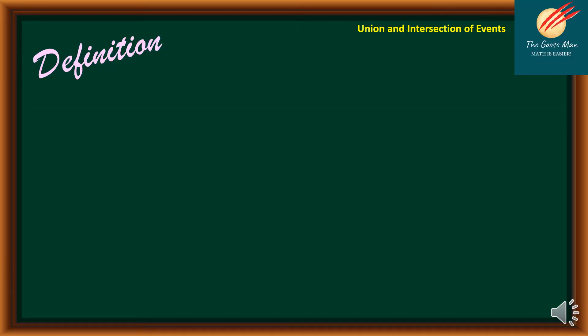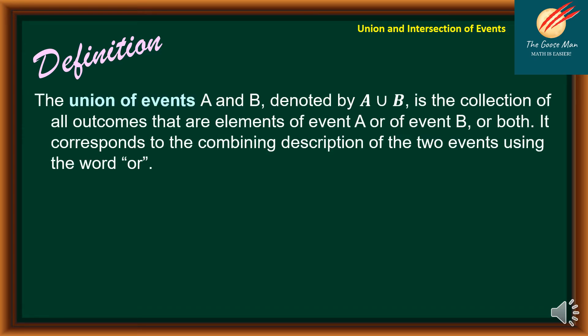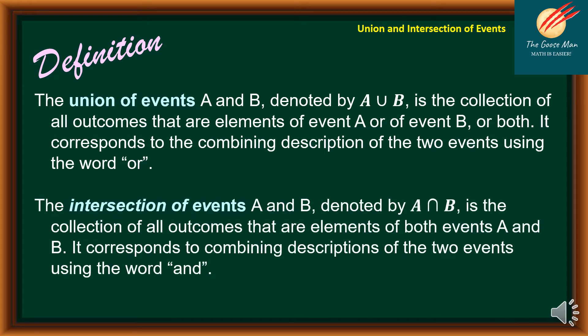Before we dive into our topic, let us record first some definitions. The union of events A and B, denoted by A union B, is the collection of all outcomes that are elements of A or elements of B, or both. It corresponds to combining descriptions of the two events using the word OR. On the other hand, the intersection of events A and B, denoted by A intersection B, is the collection of all outcomes that are elements of both events A and B. It corresponds to combining descriptions of the two events using the word AND.